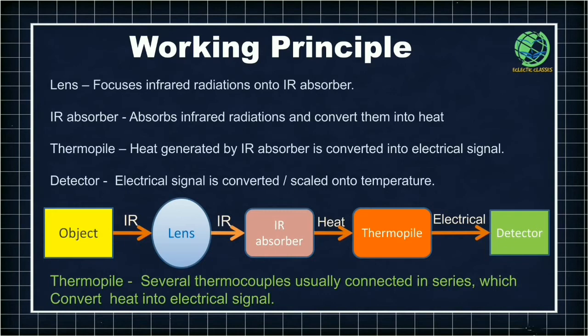We now have an electrical signal which is dependent on the infrared radiation, which in turn is dependent on the temperature of the object being measured. So we have achieved an electrical signal corresponding to the temperature of the object. The role of the detector is to map that electrical signal into temperature. This is the total process of temperature measurement through an infrared thermometer.